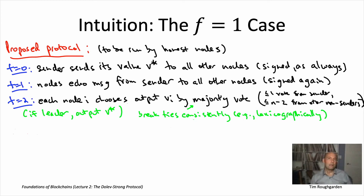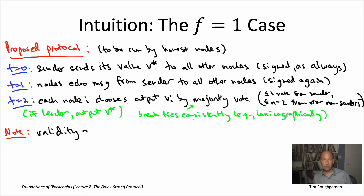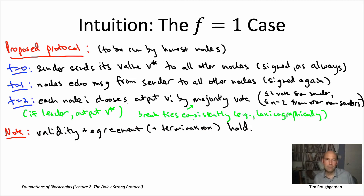That's the protocol — pretty simple. The sender sends out their value to everybody, non-senders compare notes, and they resolve any ambiguities by doing a local majority vote. I claim this protocol actually solves the problem as long as f equals one — at most one Byzantine node. This protocol satisfies both validity and agreement, and obviously it satisfies termination, since it terminates at the end of time step two.